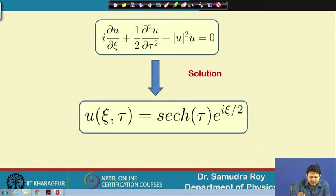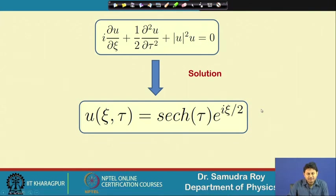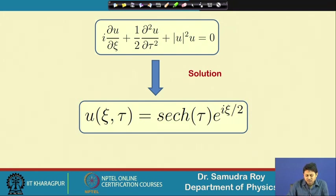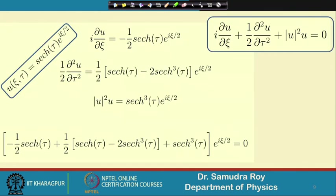This tells you that if a sech pulse is launched and governed by this equation, in the frequency domain also its shape will be preserved — which is basically the condition of an optical soliton.